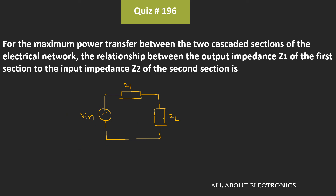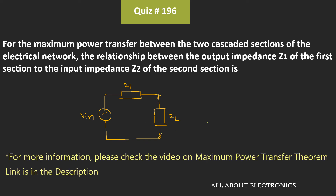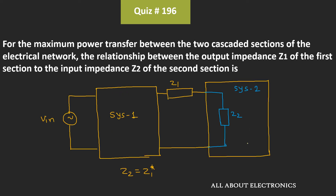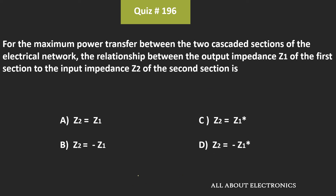This is similar to the normal circuit case, where maximum power is transferred to a load impedance Z2 whenever Z2 is the complex conjugate of Z1. So for this question, the condition for maximum power transfer is Z2 = Z1*, meaning option C is the correct answer.